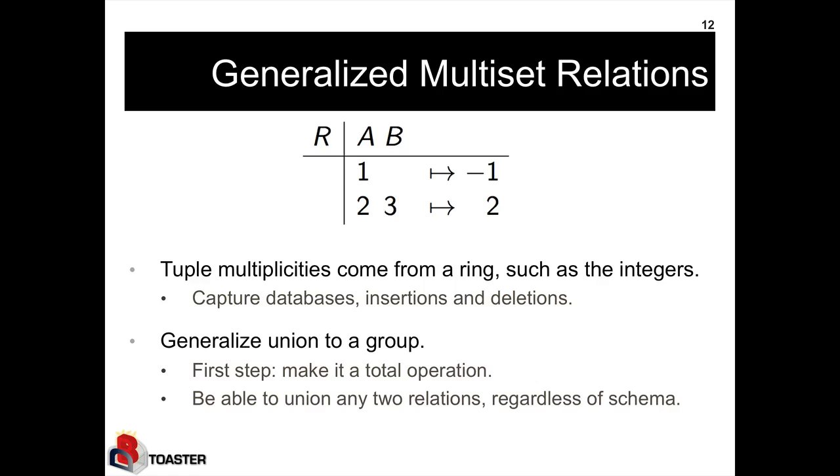We will also have to generalize the union operation, this plus operation, to a group. And for that we have to make it a total operation. And that means we have to be able to union any two relations regardless of schema. So we will be able to actually have tuples of mixed schema in a single relation. In the example here, I've got the first tuple which has just schema A, and the second tuple that has schema A and B.